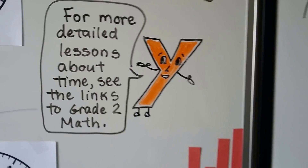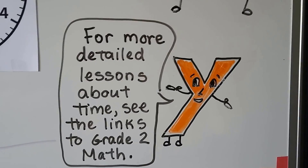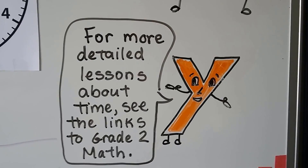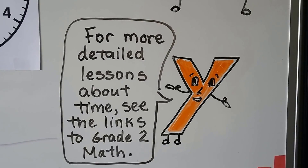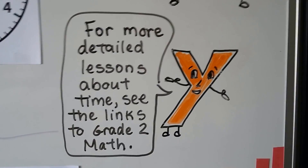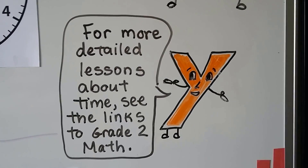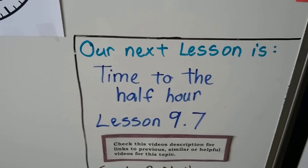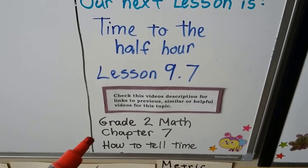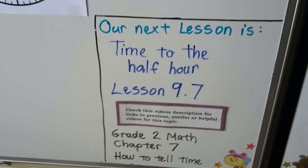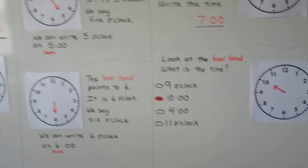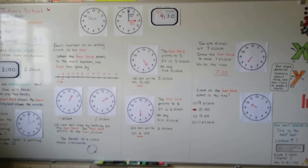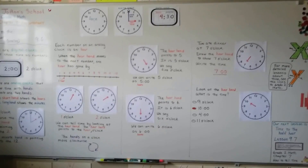For more detailed lessons about time — if you want to learn about half past, half hours, quarter past, quarter to, and about minutes and seconds — you can go to my grade two math videos from chapter seven, which have very detailed lessons about telling time. This is first grade math; we're only going to get into hours and half hours. Our next lesson is time to the half hour, lesson 9.7. There'll be links in this video's description for those grade two math chapter seven videos. I hope you're having a great day, and I'll see you next video. Bye.